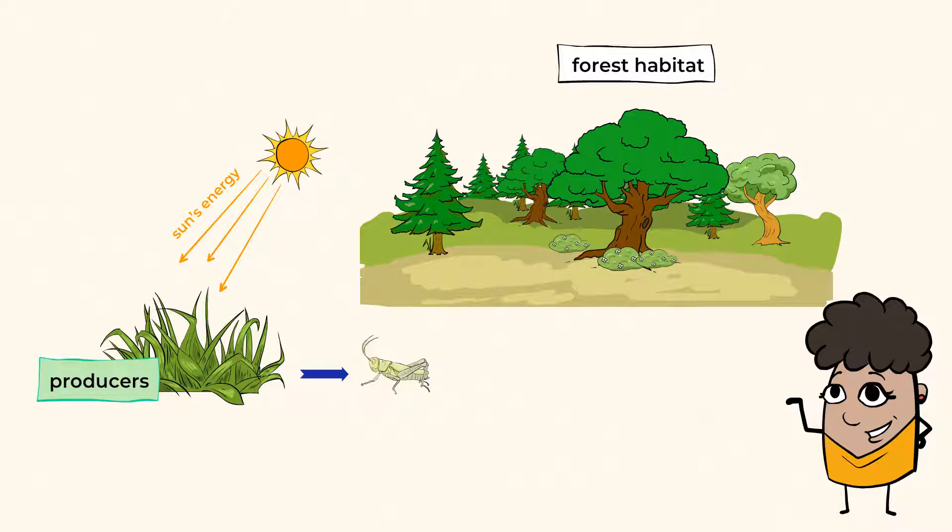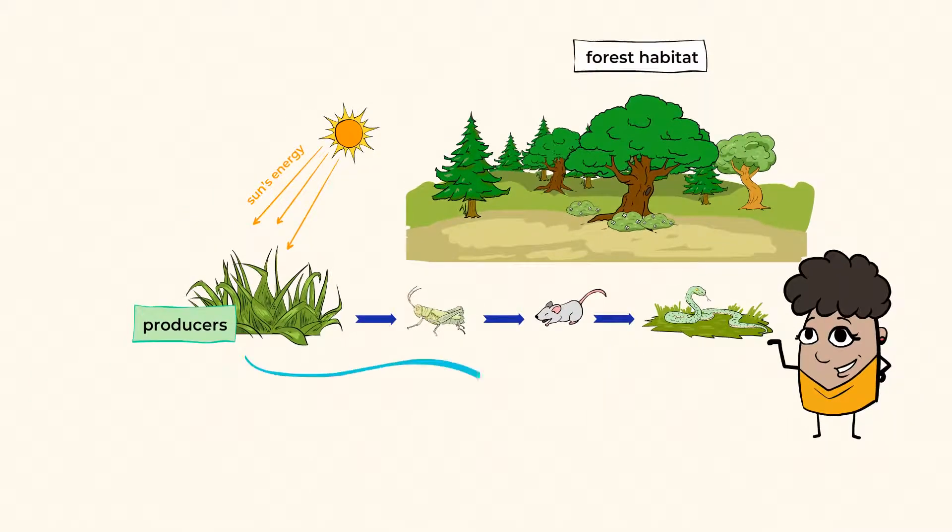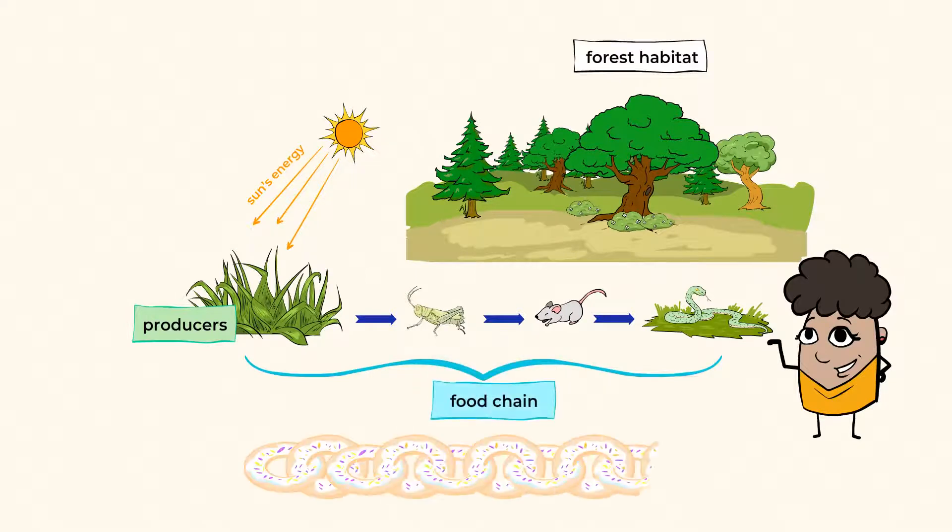The grasshopper is a tasty snack for a mouse. And then the mouse becomes dinner for a snake. It's one living thing eating the other. Each form of food is a link in a chain. A food chain.